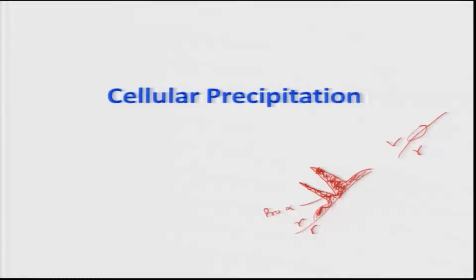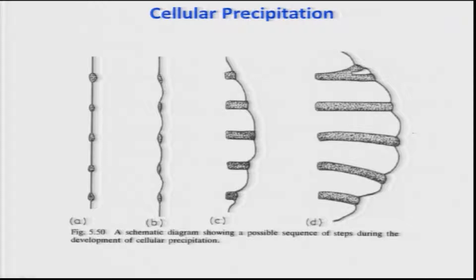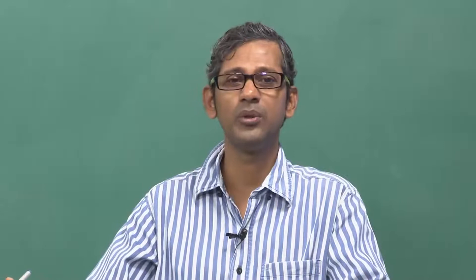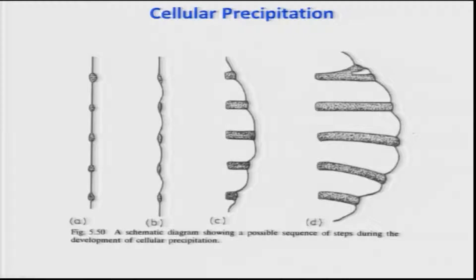The essential feature of cellular precipitation — as shown in figure 5.50 of Porter and Sterling — is that the grain boundary on which precipitation happens moves along with the precipitation. In Widmanstätten and pro-eutectoid precipitate cases, the grain boundary does not move; here it does. The boundary moves along with the growing tips of the precipitates, leading to a cell-like feature. The transformation equation is α' → α + β, where α' is the supersaturated solid solution and β is the equilibrium precipitate.